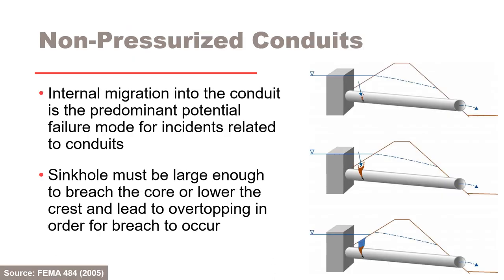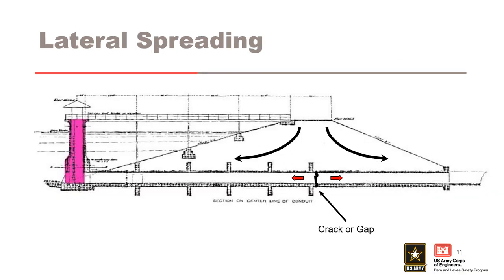As water is impounded, a phreatic line develops and seepage forces are active in saturated soils around the conduit. Seepage can enter any defect in the conduit if the conduit has an interior pressure lower than the water in the soil's pores. If seepage discharging into a non-pressurized conduit has sufficient gradient and soils are erodible, soil particles may be carried with the flow, and internal migration will cause a void or sinkhole to develop.